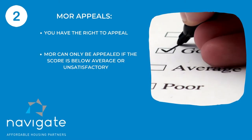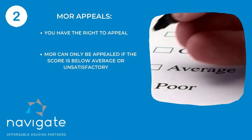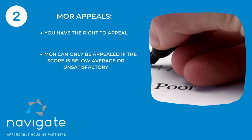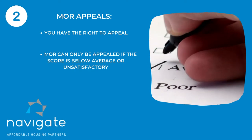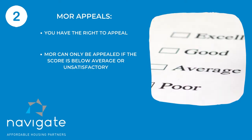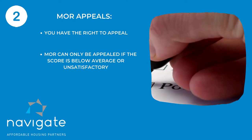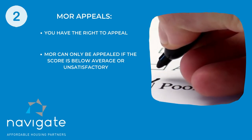So if you get a satisfactory, there is no appeal process. If you get an above average, you're doing great — you don't need an appeal. And if you receive the special superb, you don't need an appeal either.